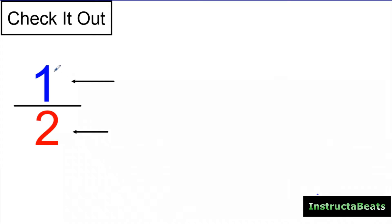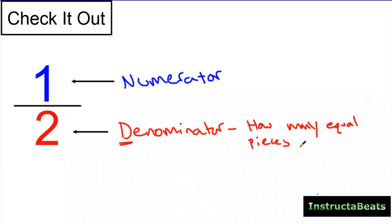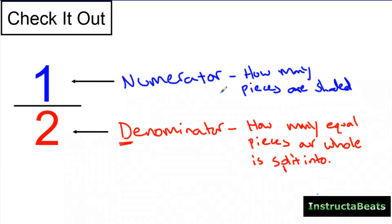This is how you're going to see a fraction being written. You have a number, you have a line, and then you have another number. The top number on a fraction is called our numerator. The bottom number on our fraction is called a denominator — D for down, or the bottom of the fraction. The denominator is going to tell us how many equal pieces our whole is split up into. Our numerator is going to tell us how many pieces are shaded in that fraction, or how many pieces we're talking about.